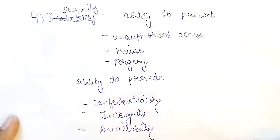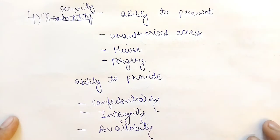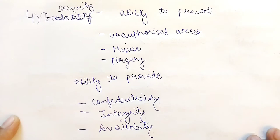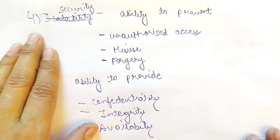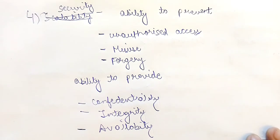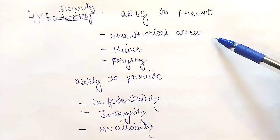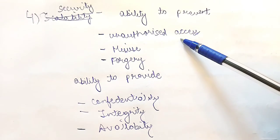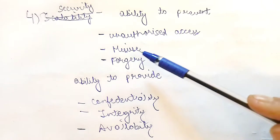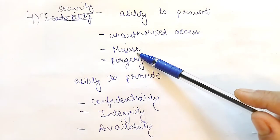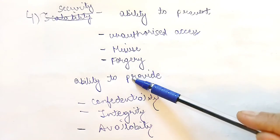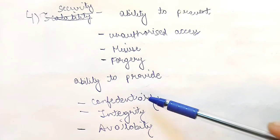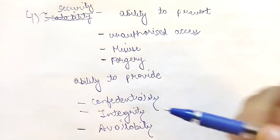The last characteristic is security. Scalability we have already seen is the ability to grow based upon the needs and still have the same performance. Security means the network must be able to prevent any kind of unauthorized access, any kind of misuse of information, and any kind of forgery. It must also be able to provide confidentiality, integrity, and availability.